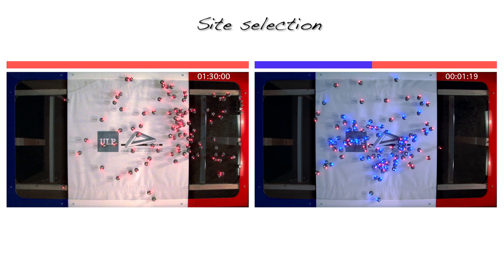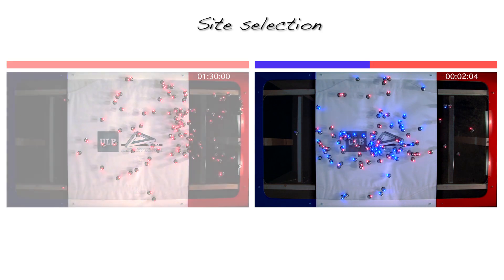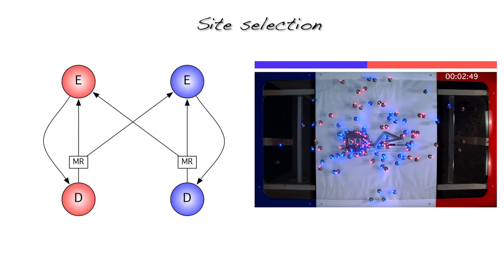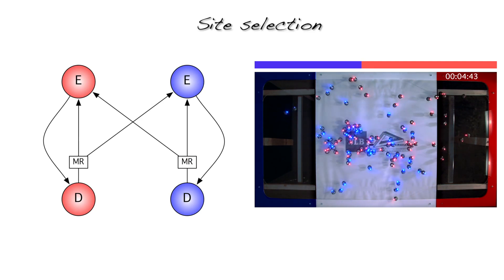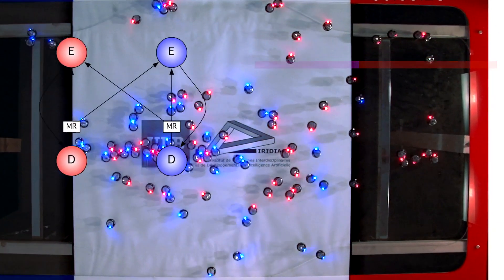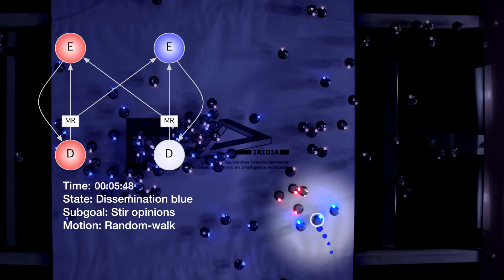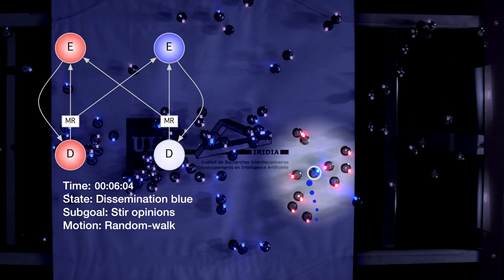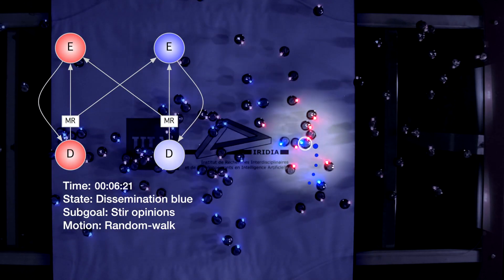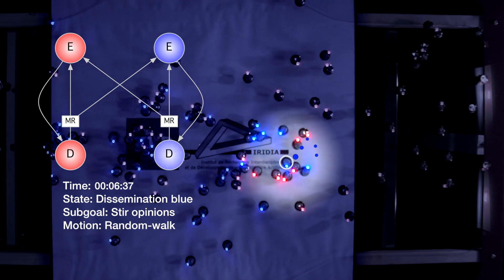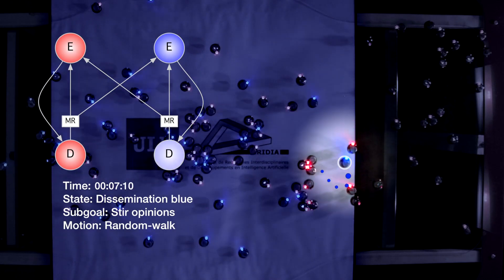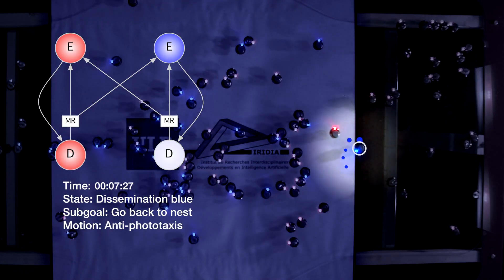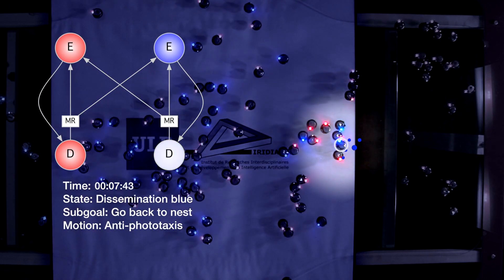We control the Kilobot with a finite state machine that implements our decision-making strategy. In the dissemination state, the robot is in the nest and its primary goal is to promote its current site preference. To do so, the robot repeatedly broadcasts its preference while performing a random walk.